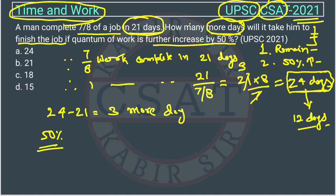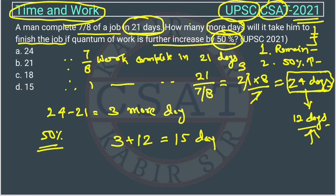Total days: 3 days for the remaining work plus 12 days for the 50 percent increased work equals 15 days. So in 15 days the man will complete the work. The answer is option T. If you still have any issues, you can connect with us and I will explain this question personally.